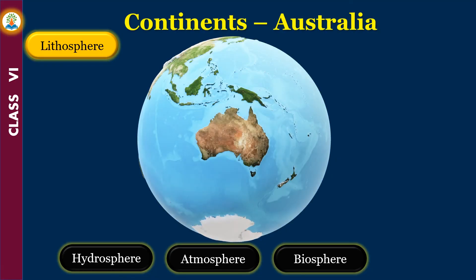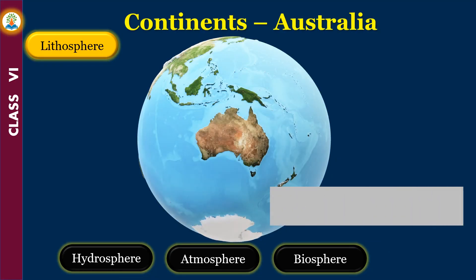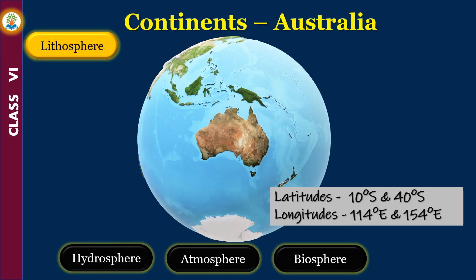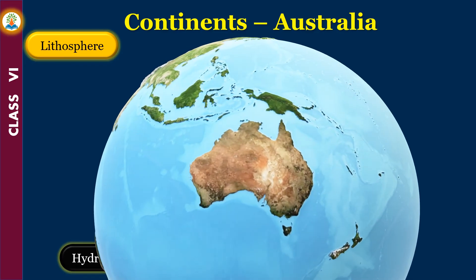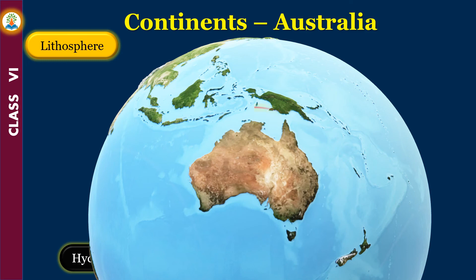Australia is the smallest continent. It lies between 10 degrees south and 40 degrees south latitudes, and 114 degrees east and 154 degrees east longitudes approximately. Australia is surrounded on all sides by seas and oceans, and is thus commonly known as the island continent.